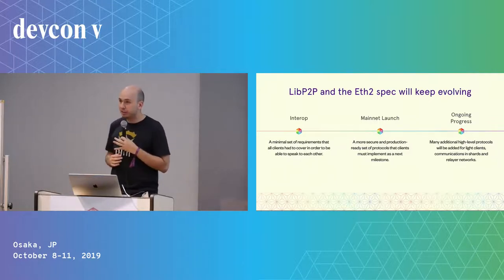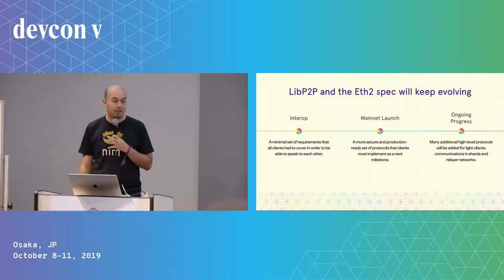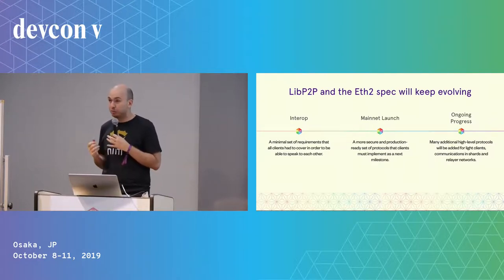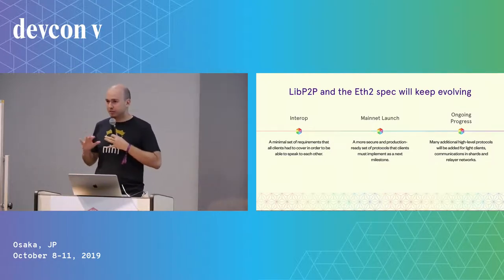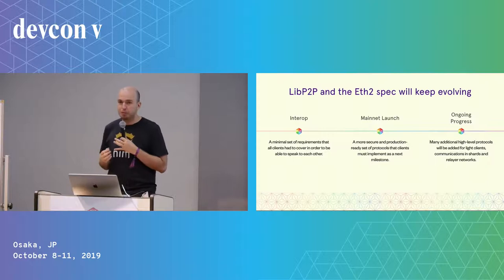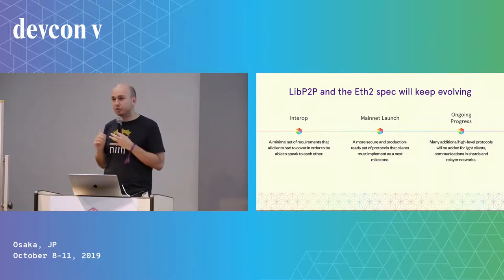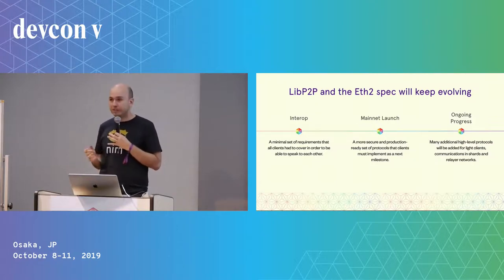That's obviously not the end of the road. The libp2p spec we created for Ethereum 2 is divided into two or more phases. We identified an initial minimal set of common requirements that all clients must implement to talk to each other. But these are not the underpinnings of a fully secure system. For launching mainnet, we'll be changing many protocols to use more modern cryptography, adding new transports, and over time defining new high-level protocols for things like light clients, shard communication, and so on.